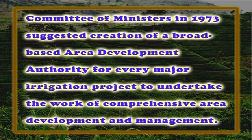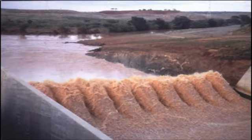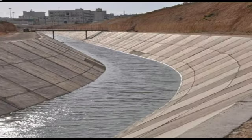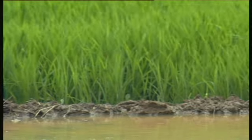Following this, a committee of ministers in 1973 suggested creation of a broad-based area development authority for every major irrigation project to undertake the work of comprehensive area development and management. On the basis of the recommendations of the committee of ministers, the Government of India launched a centrally sponsored scheme of Command Area Development Program in 1974-75. The primary objective of this program has been to bridge the gap between the irrigation potential created and that utilized, through increase in irrigated areas, and thereon to increase efficient utilization of irrigation water and improve the agricultural productivity in the irrigation commands. The program envisaged an integrated and coordinated approach to the development and management of command areas.